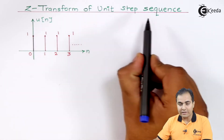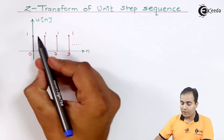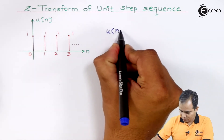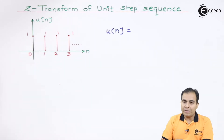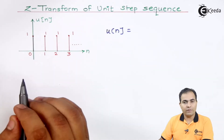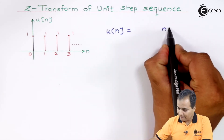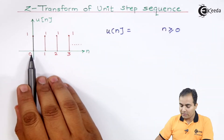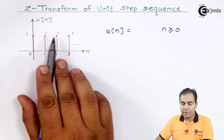I am going to consider this as my unit step sequence. Now, u(n) is causal, or you can say right-handed, which means the graph is available from 0 to infinity only. So we can say that when n is greater than or equal to 0 — greater than means n > 0, and equal to means at n = 0 also — it is having amplitude 1.